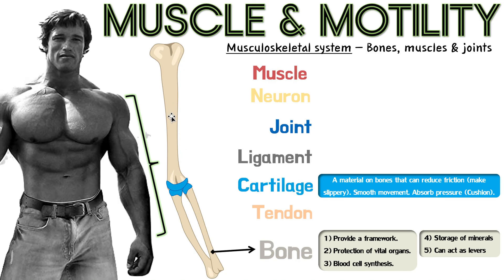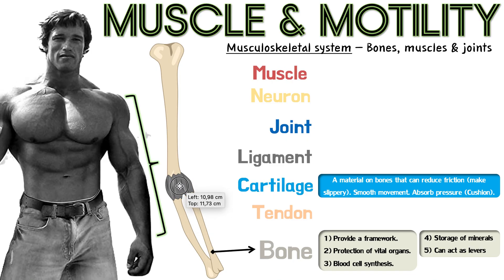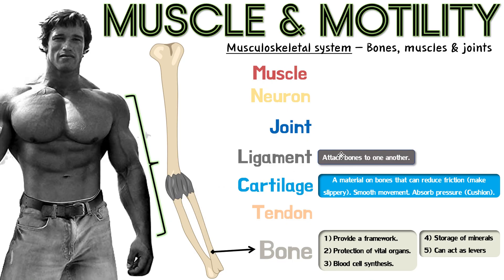So what connects the bones to each other? The thing that helps connect these bones is called ligaments. Ligaments are little structures that physically span from one bone over to another and keep them together. We have a lot of those little ligaments working together, keeping the whole joint stable. A ligament is a little structure that attaches bones to one another.